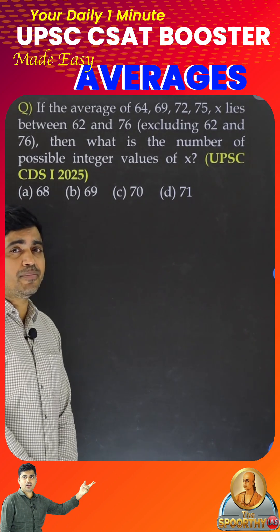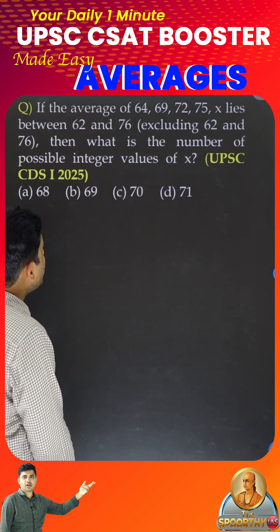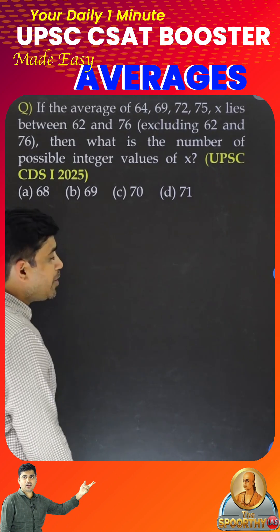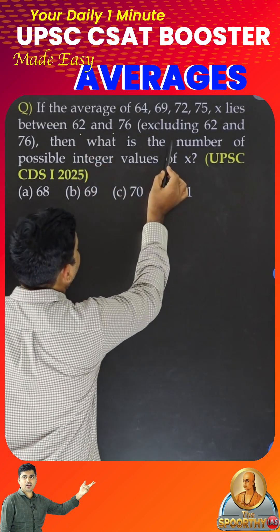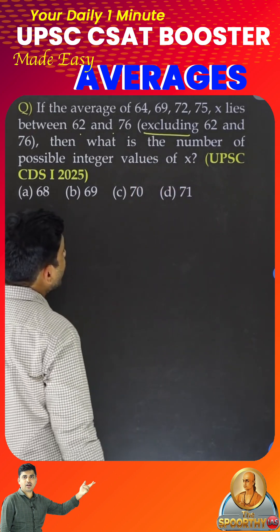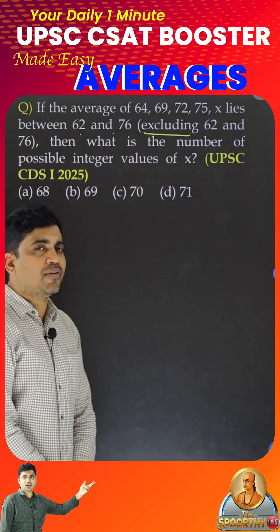Their average is in between 62 and 76. Between normally means these two are not included, but it is also given excluding 62 and 76.